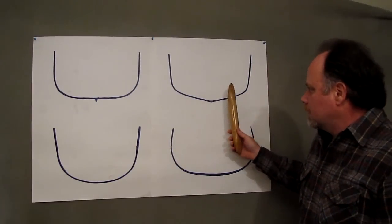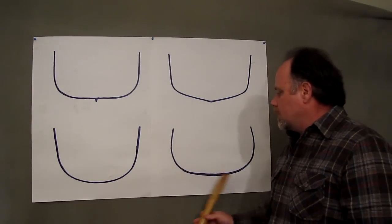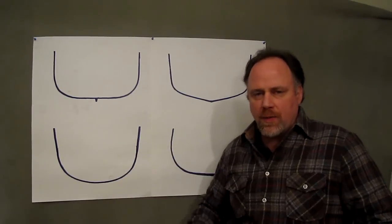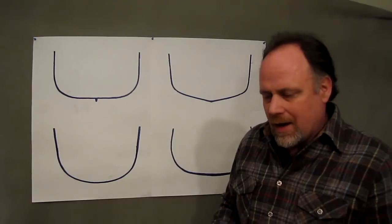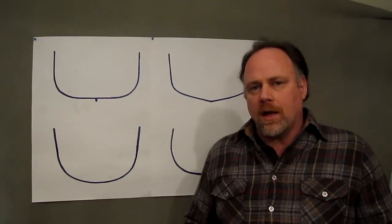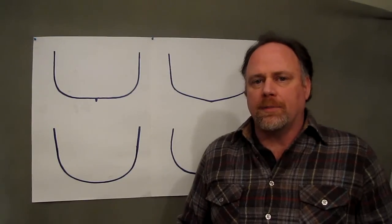These two boats, the V bottom, the shallow V, and the shallow arch, are a compromise between these boats. Let's remember, any time we're talking about hull design and looking at gaining an advantage by manipulating that hull, we're going to have to give something up somewhere.